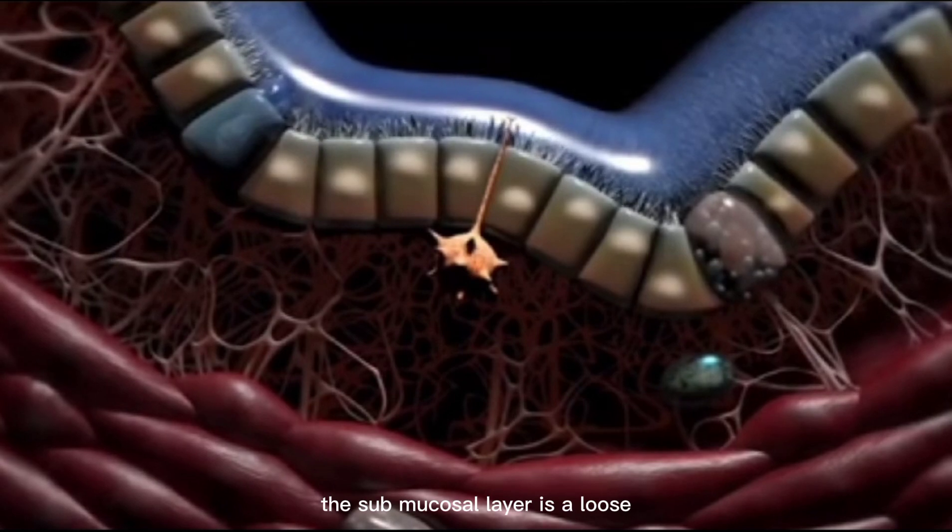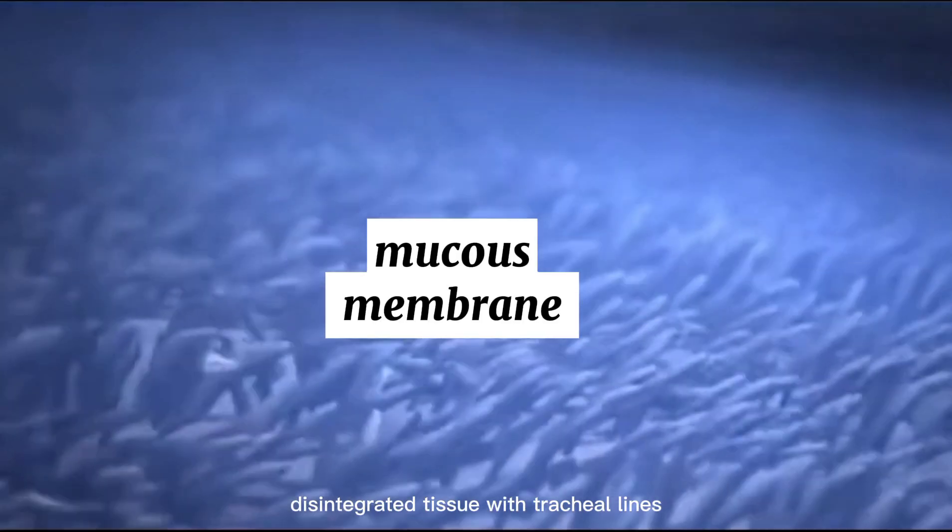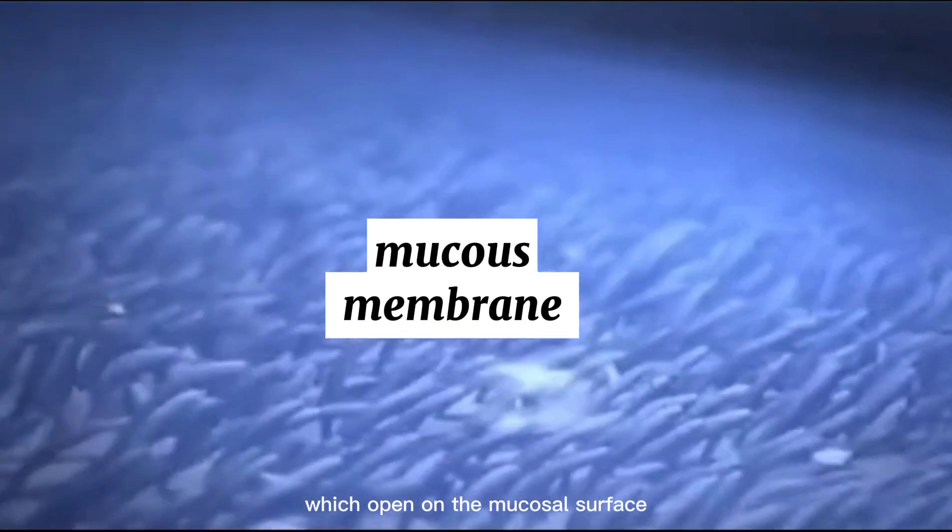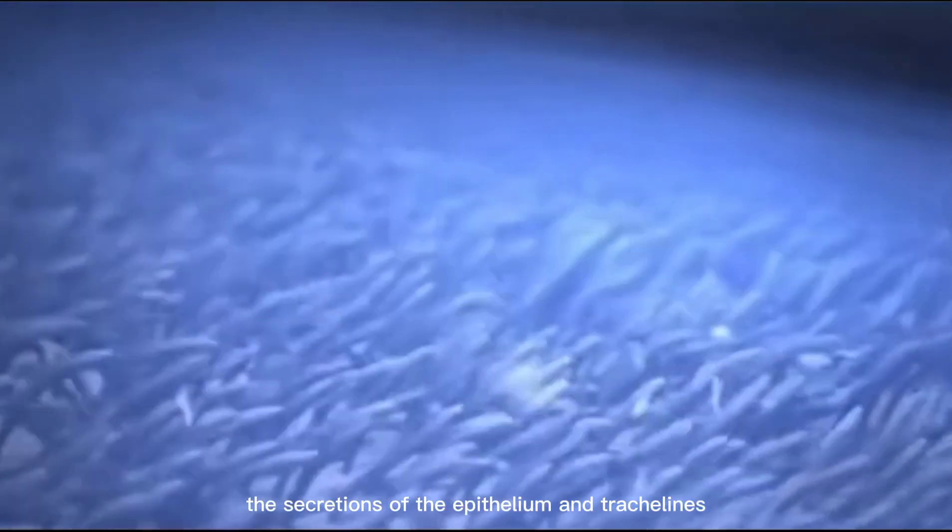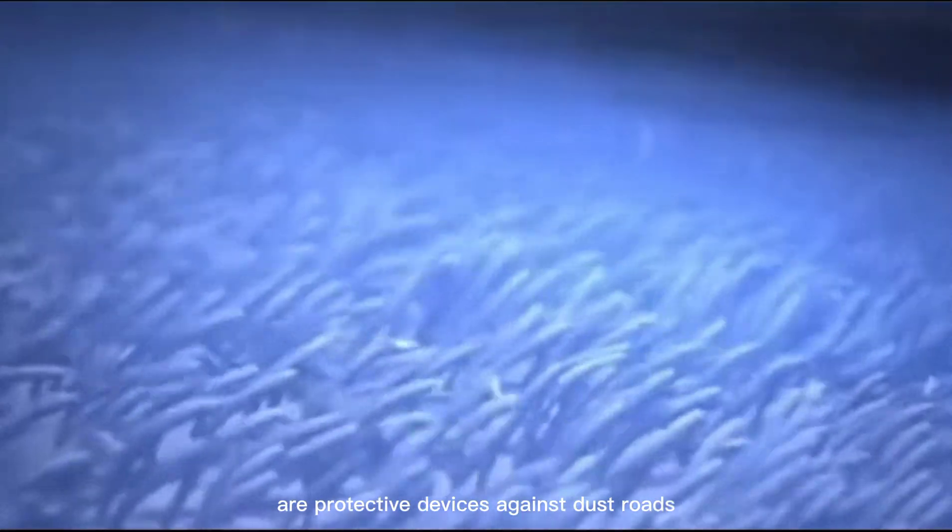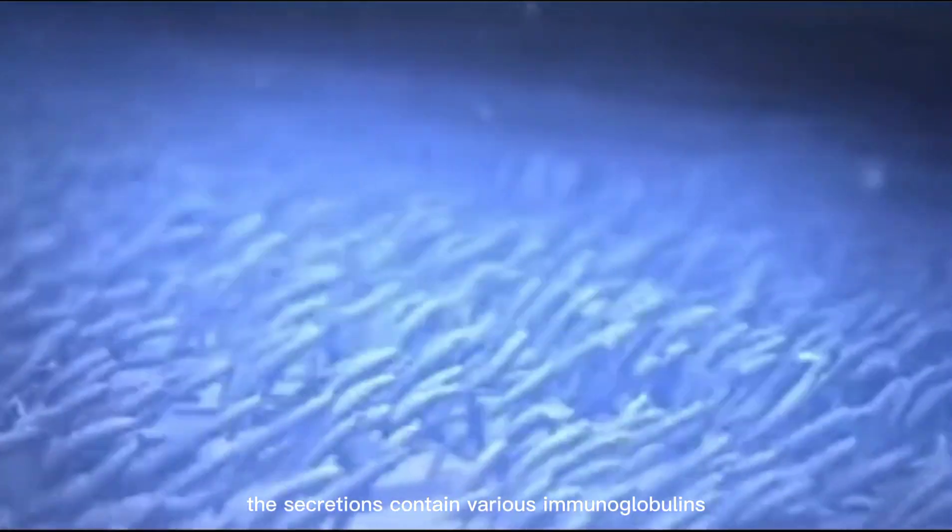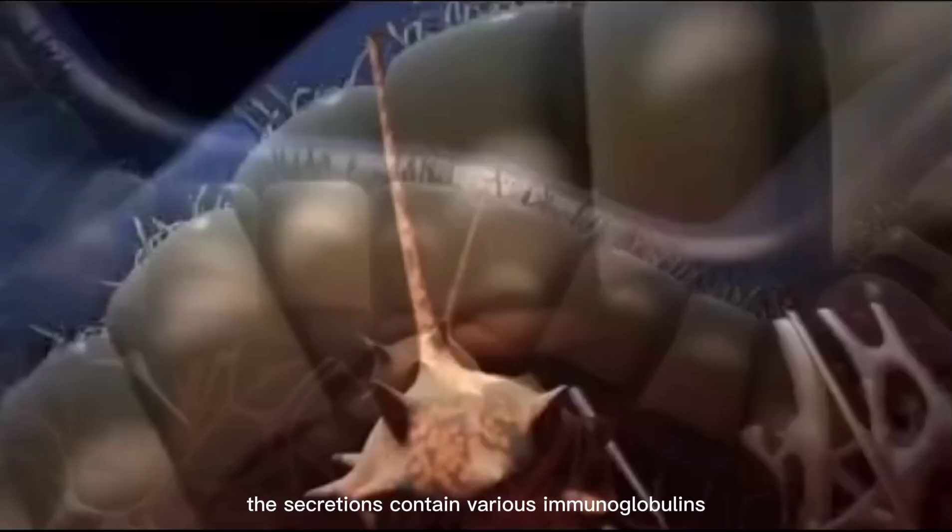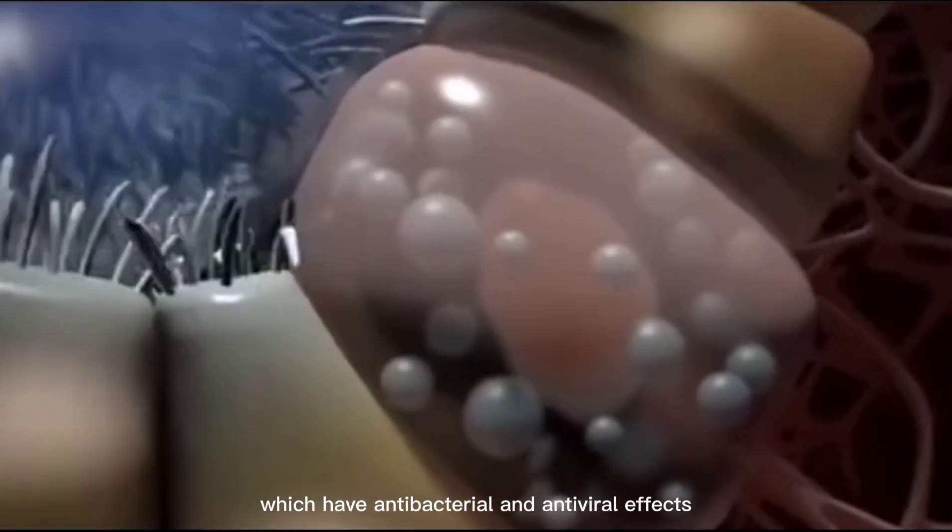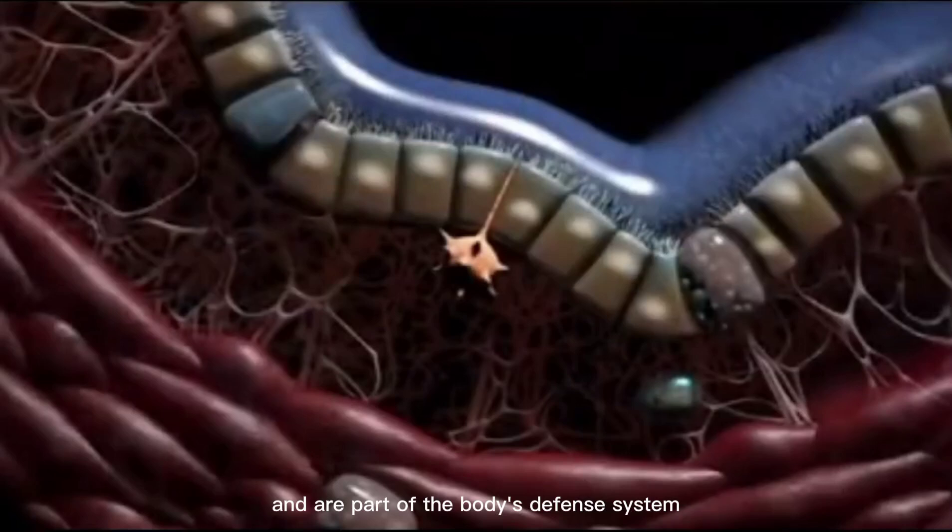The submucosal layer is a loose connective tissue with tracheal glands which open on the mucosal surface. The secretions of the epithelium and tracheal glands are protective devices against dust. The secretions contain various immunoglobulins which have antibacterial and antiviral effects and are part of the body's defense system.